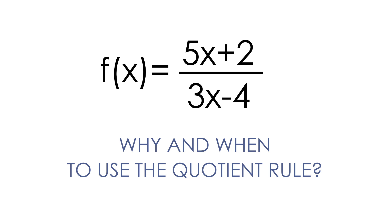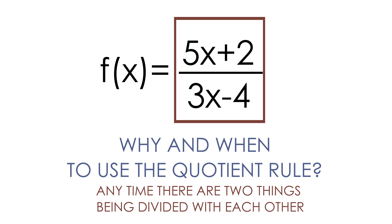And the first thing I want to talk about is why and when we need to use the quotient rule. And notice in our function we have a quotient. We have two things being divided with each other. The 5x plus 2 is being divided with the 3x minus 4. Anytime you have two things being divided with each other, we need to use the quotient rule to take the derivative of the function.